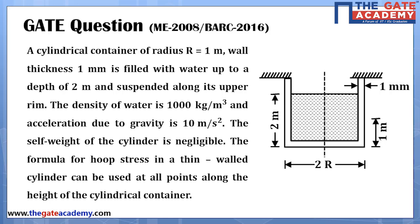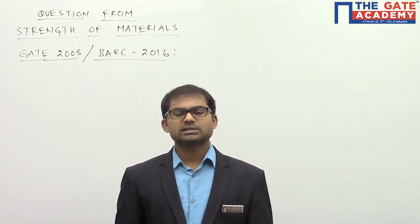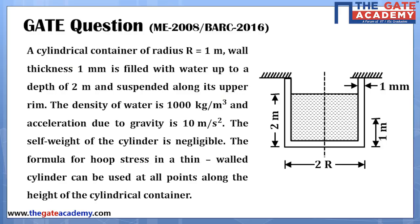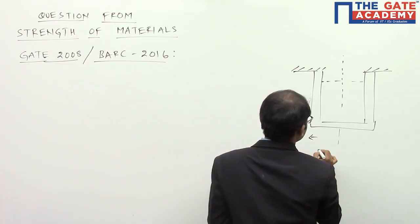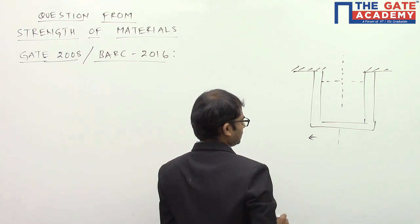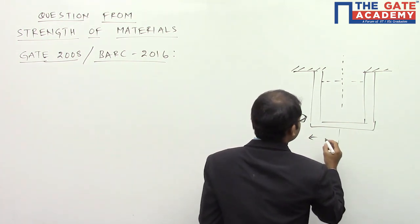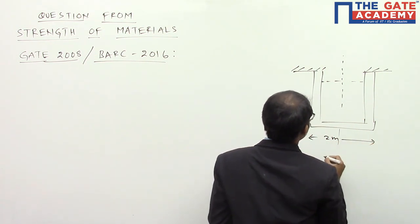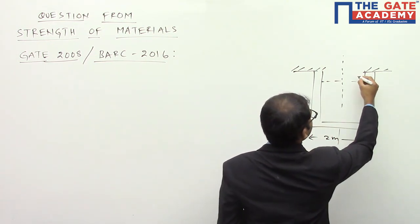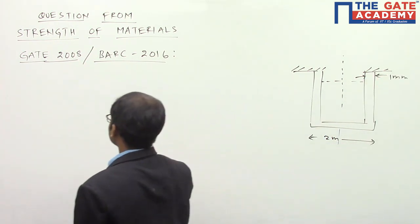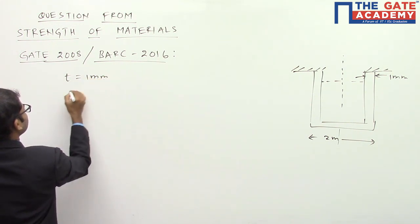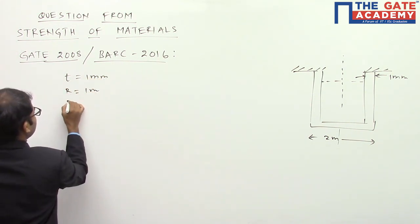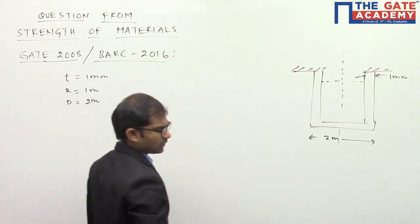As you can see on screen, it's a vertical cylinder with liquid inside. Since the liquid is in static conditions, pressure increases along its depth. Redrawing the diagram on the board: r = 1 meter, so the diameter is 2 meters, total height is 2 meters, and wall thickness t = 1 millimeter.